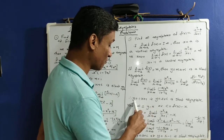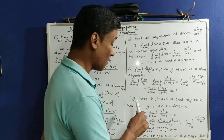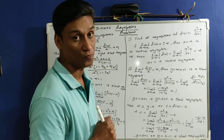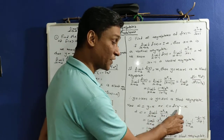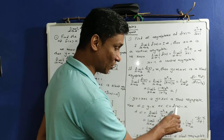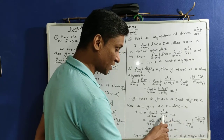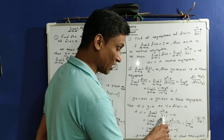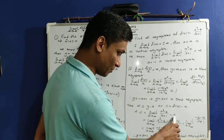Since m = 1, y = mx + c becomes y = x + c, and y = x + c is a slant asymptote. To find c, we use c = limit as x tends to infinity of [f(x) − x] = limit of [(x² − 4)/(x + 1) − x].